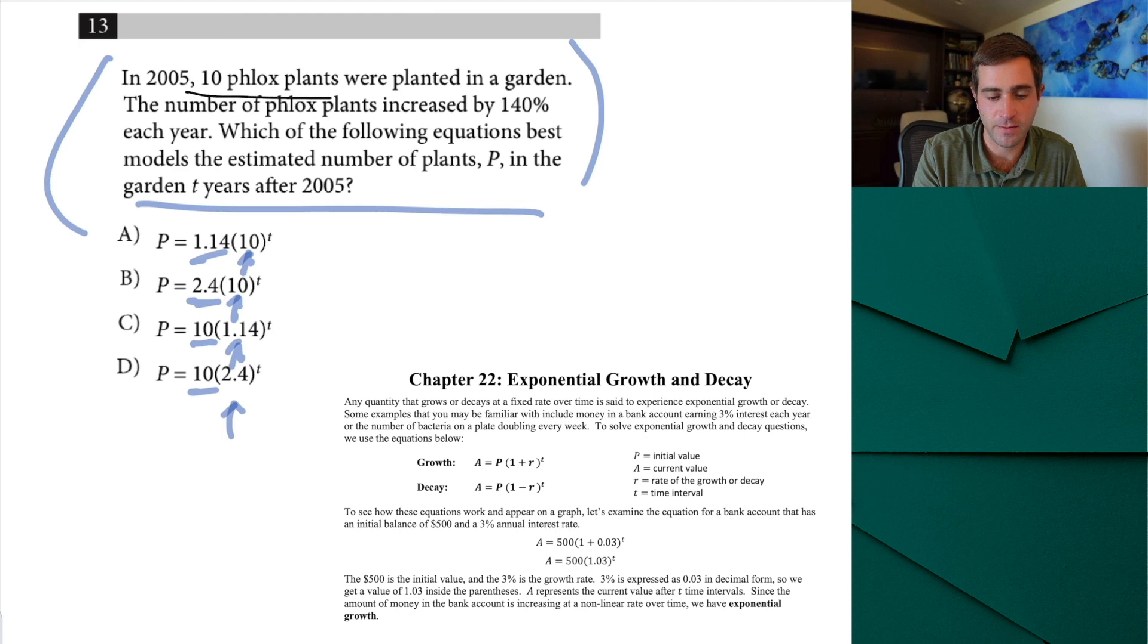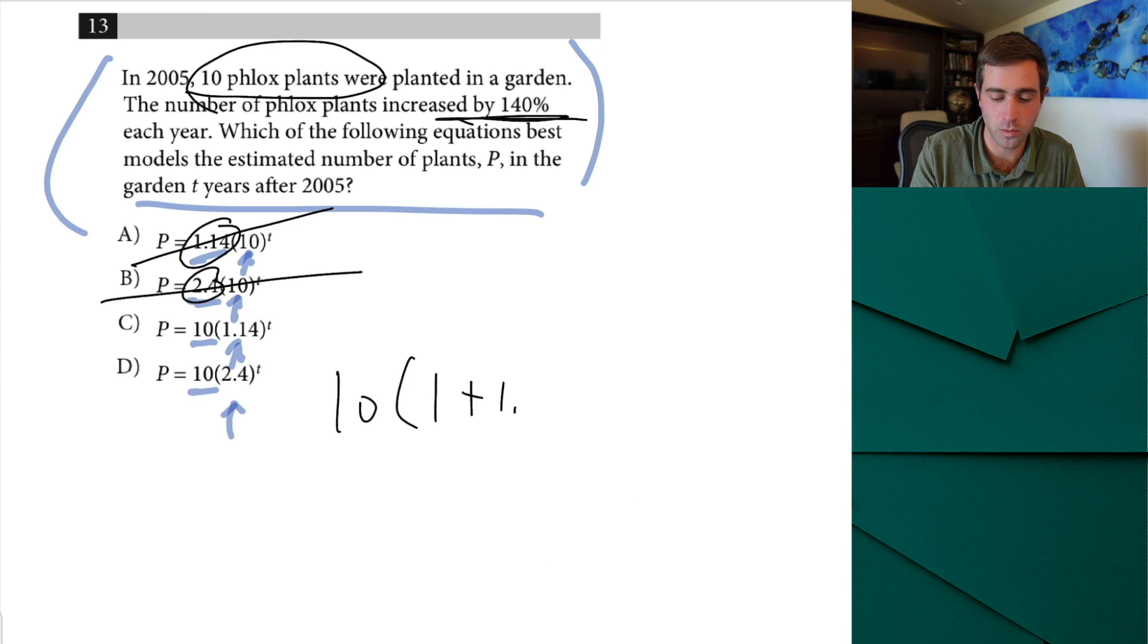So in 2005 10 phlox plants were planted in a garden so that's our starting value so anything that doesn't have 10 in this spot is automatically wrong. Now the only thing we have to look at is the one plus or minus. Now the number of phlox plants increased by 140 percent well 140 percent is the same as 1.4 so this equation is the same as 10 times 1 plus 1.4 to the t and that is the exact same as 10 times 2.4 to the t.